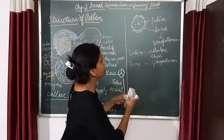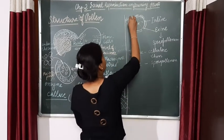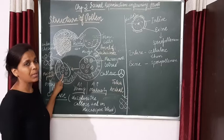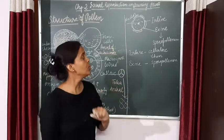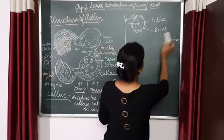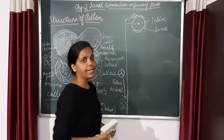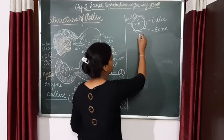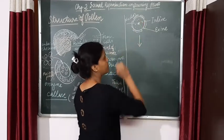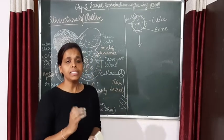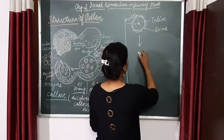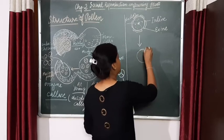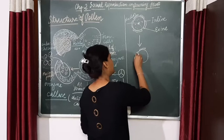Coming back to the structure again — this is the nucleus. I am drawing this structure again: this is the structure of a microspore, the male gametophyte. This was about the exine and the intine. So this is the structure of a microspore or a pollen. The inner layer is intine and the outer is exine.